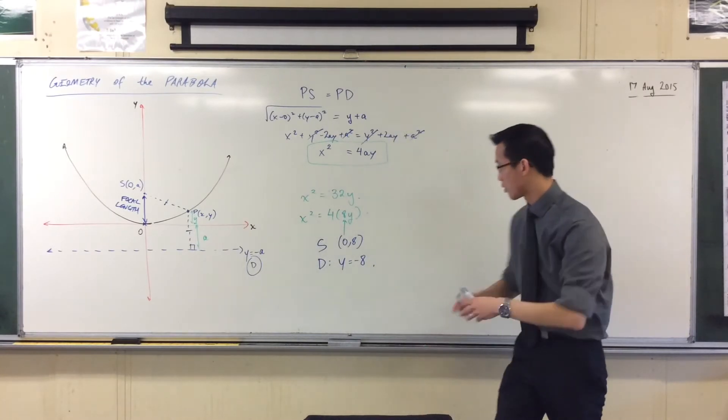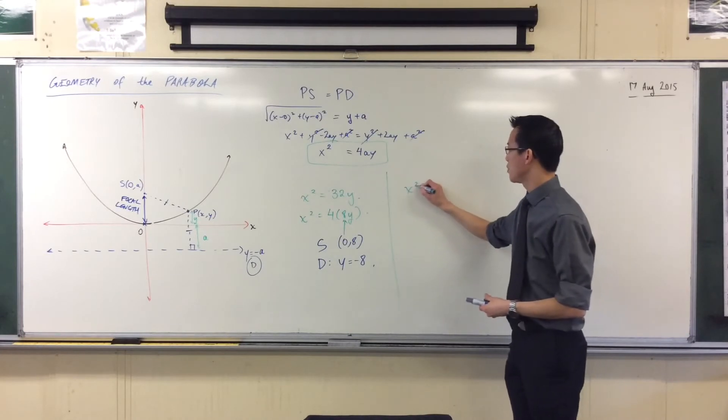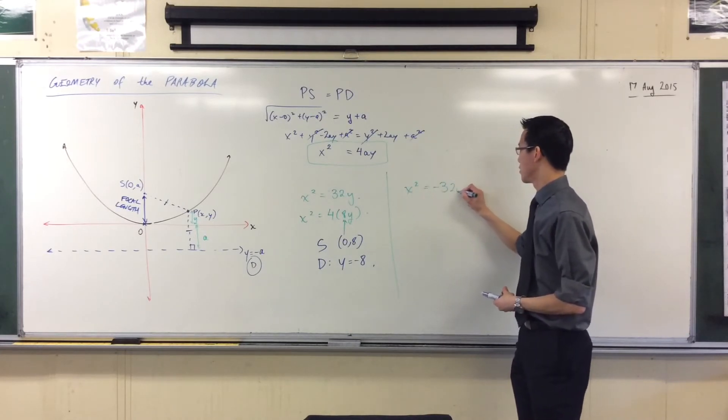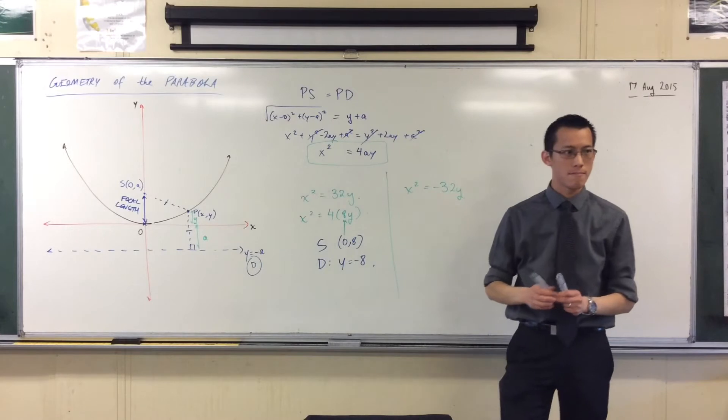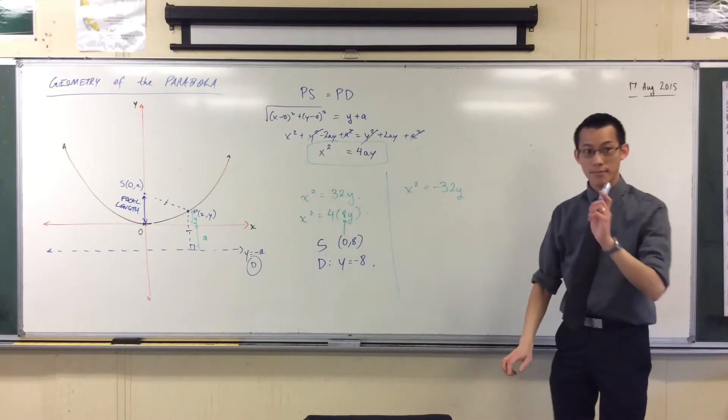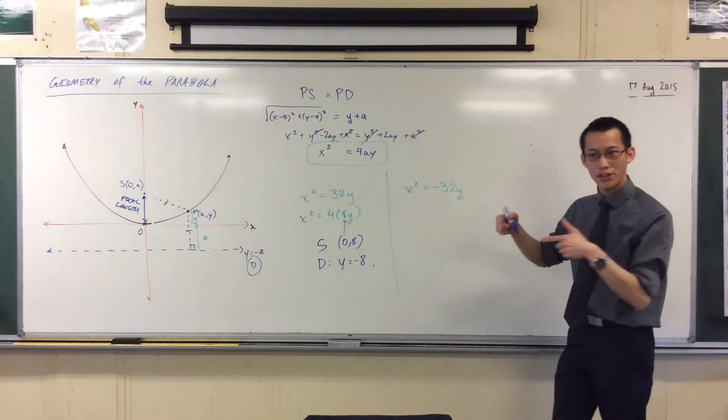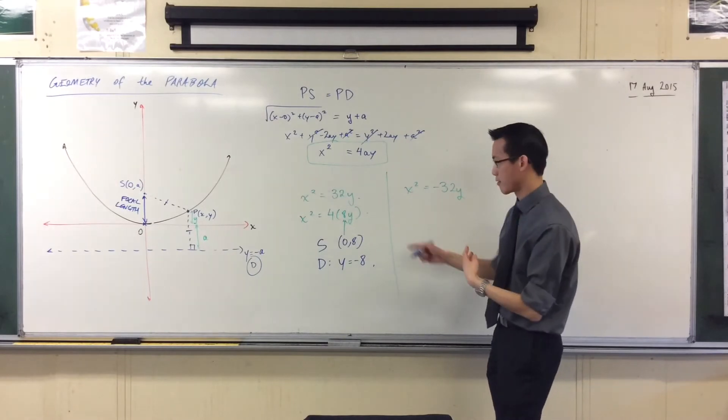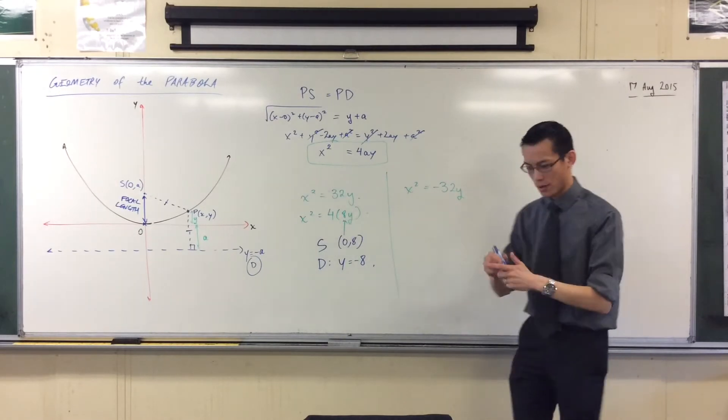What if, now going to that example I was talking about before, what if I gave you this? It's the same thing, because length is always positive. Good. So I'm still going to preserve a as being 8. But, oops, sorry, I'm still on green.